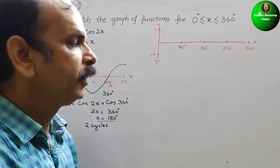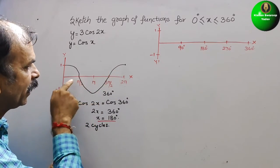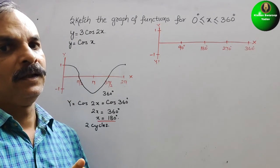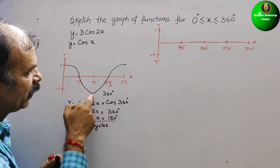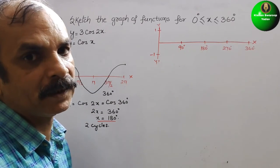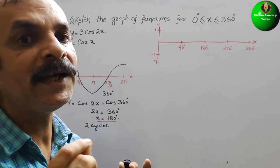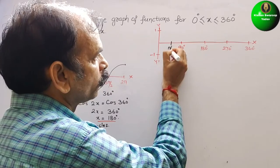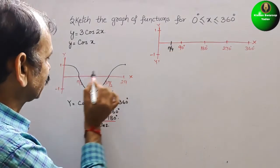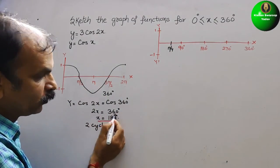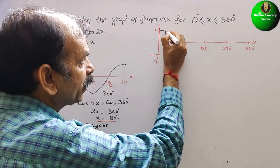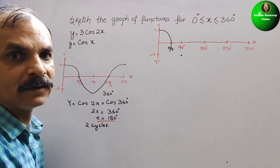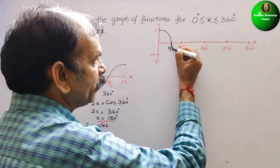In the original cos graph, π/2 was the midpoint of the first half-cycle. Now for cos(2x), one full cycle completes at 90°. So the midpoint of the first half-cycle is at π/4, which is 45°. The graph starts at 1, crosses zero at 45°, and reaches minus 1 at 90°.